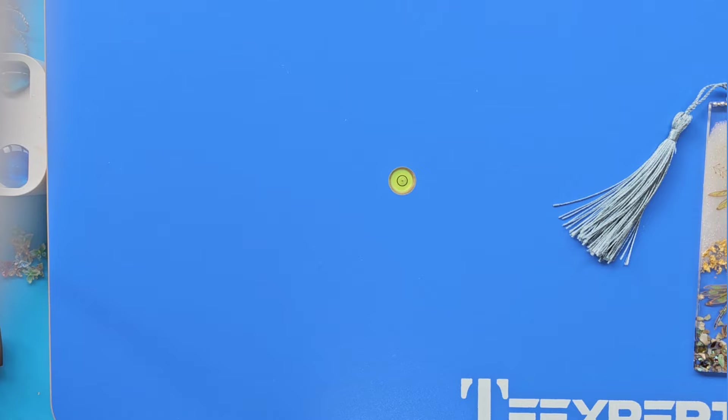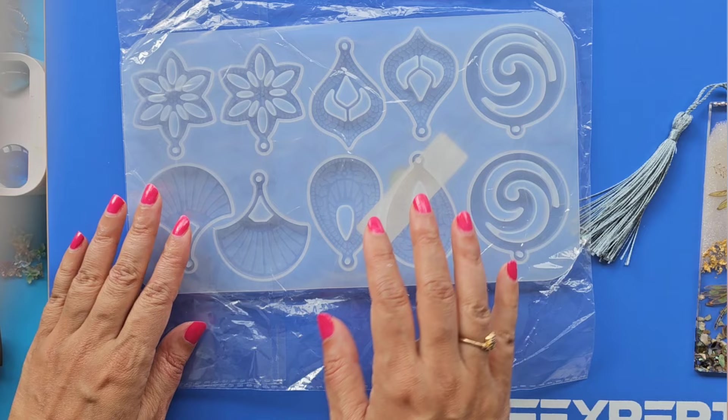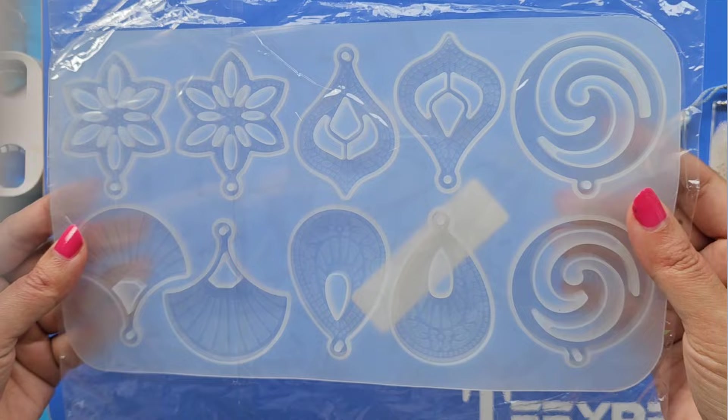Then moving on, I bought this which was a resin mold for earrings. You can see what that looks like, lots of different earrings or pendants or whatever you want to do with them. That cost me £2.69.